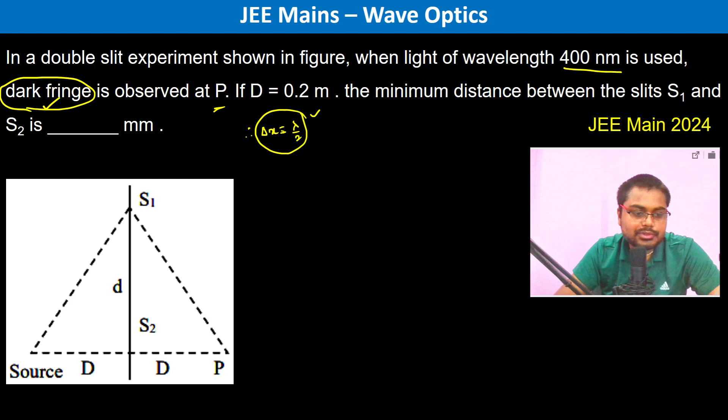Now since delta X should be equal to lambda by 2, we can see the path traveled is like this. For the first wave it's going to be root over D square plus d square, and this is just D.